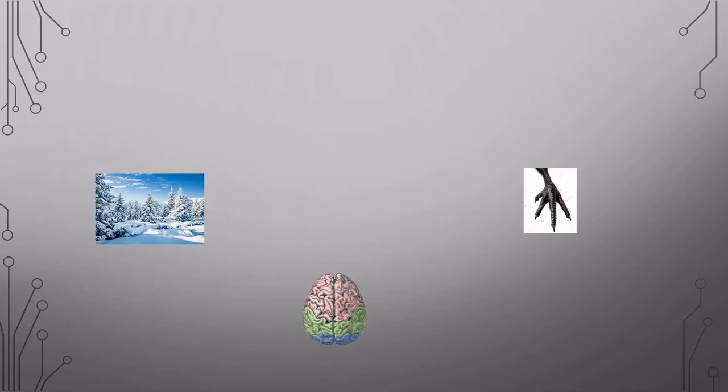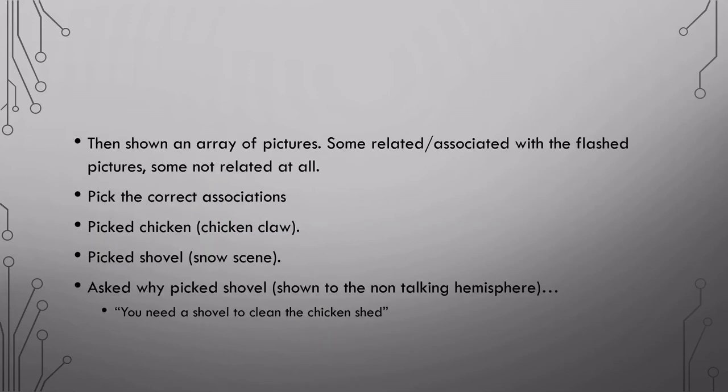In other examples of this, researchers experimentally showed pictures to both visual sides. A snow scene was presented to the left visual field, so the non-talking right hemisphere, and a chicken claw to the right visual field, so the talking left hemisphere. The patient next saw an array of pictures. Some weren't related to the previous pictures at all, and others critically were semantically associated. The patient was instructed to pick the ones that were related to what they had previously seen.